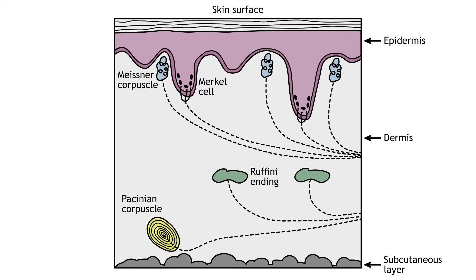Touch can come in many forms: pressure, vibration, stretch, motion, edges, points, etc. Receptors in the skin allow for perception of these different characteristics, and when this information is combined in the central nervous system, we are able to determine the location, strength, duration, movement, shape, and texture of the object interacting with the skin.